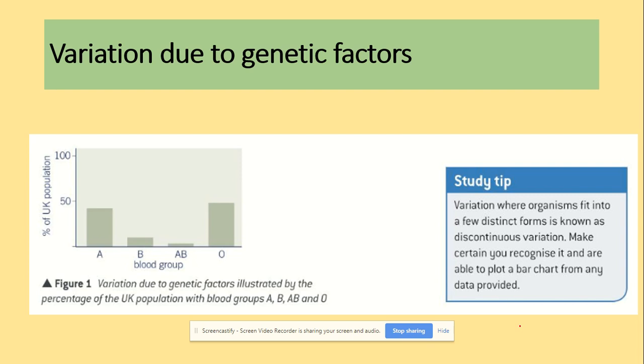Variation due to genetic factors could be seen in many ways. It could be, for example, the blood groups in humans. This shows you the percentage of the UK population of blood groups, which could be A, B, AB, and O. So that's the variation. Around the highest percentage of the UK population has blood group O, the lowest AB.